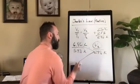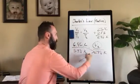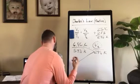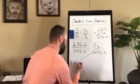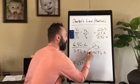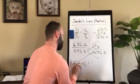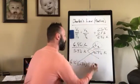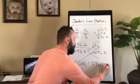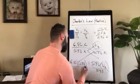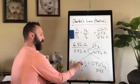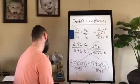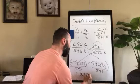So 6.80 times 298 equals V2 times 598, divided by 598. So 6.80 times 298 divided by 598 gives you a volume to three sig figs of 3.39 liters.